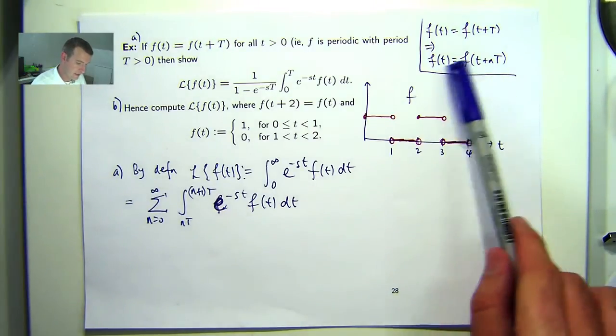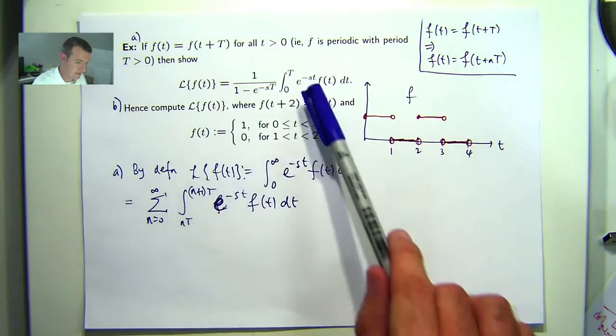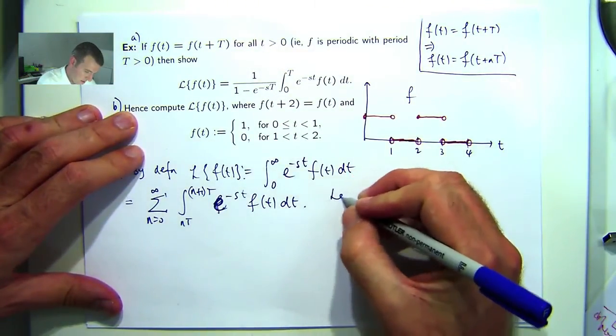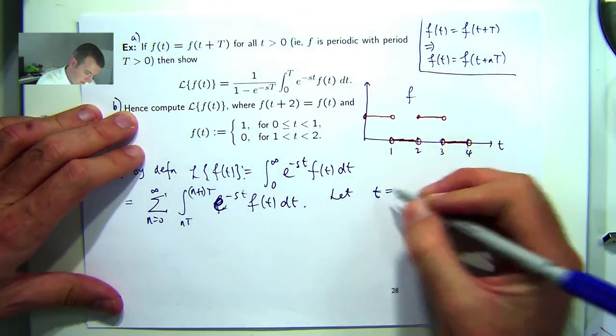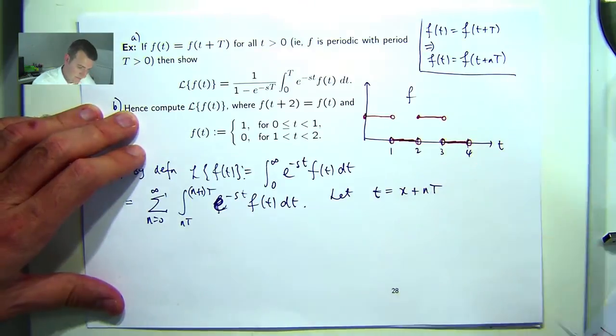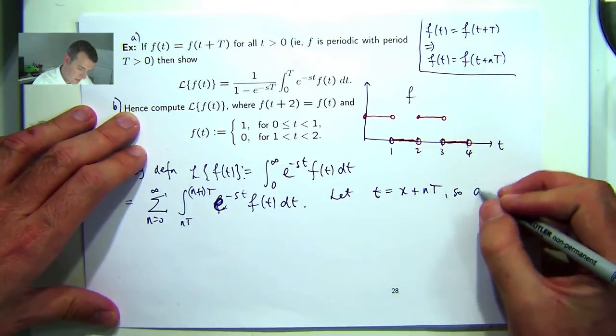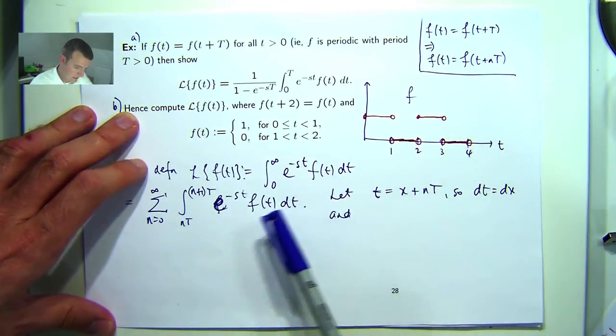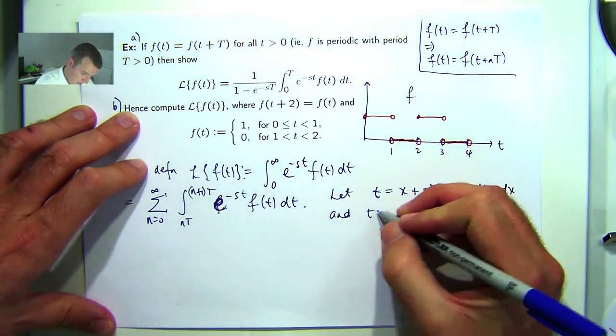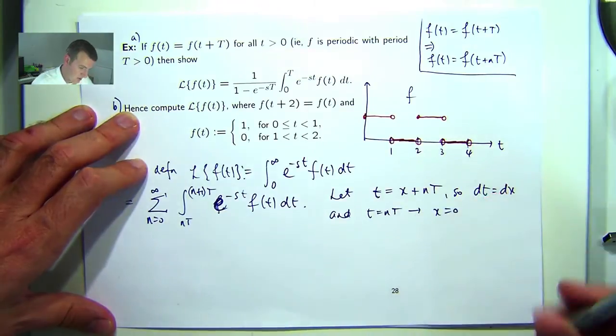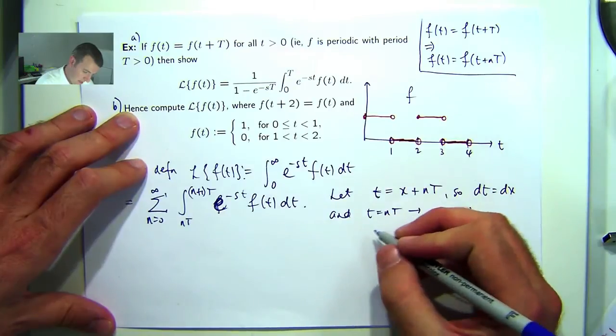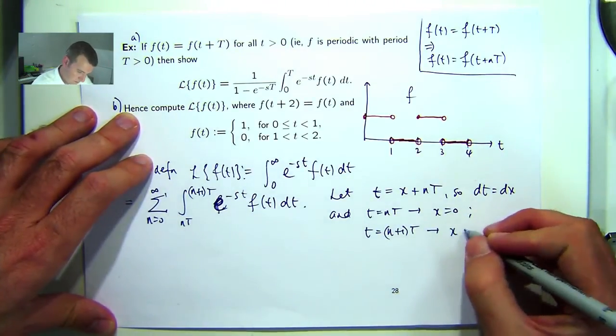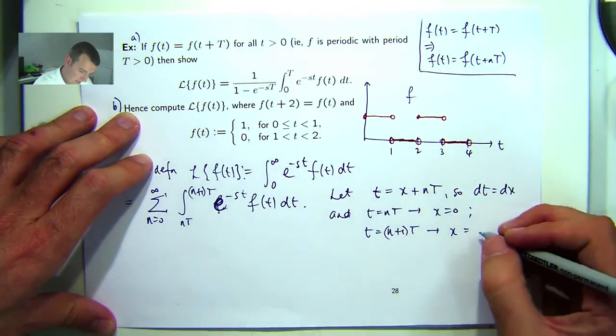Now what we're going to do is make a change of variables. We want to essentially get the lower limit to 0 and upper limit to big T. So let's make a change of variables. I'm going to let t be x plus n times big T. So dt is just dx. When t equals nT, you'll see that gives x equals 0, so we're going to get a lower limit of integration of 0. And when t equals (n+1) times big T, x will equal big T, since the nTs are going to cancel and you're going to be left with a big T.